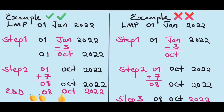Here's our example. The LMP is 1st January 2022. Step 1: subtract 3 from January, which gives us October. Step 2: add 7 to the day, which gives us 8th October. I haven't added anything to the year — it's giving us 2022. So the EDD is 8th October 2022, and it does make sense. The LMP is 1st January 2022, and the pregnancy is only 9 months, so 9 months from January falls within the same year, 2022. Our EDD is 8th October 2022.